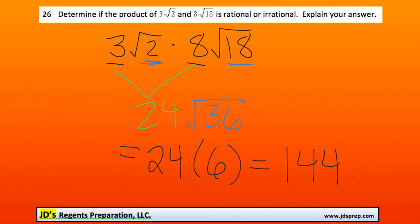Since we clearly got an integer as an answer, or even a whole number, we know that this must be a rational number.